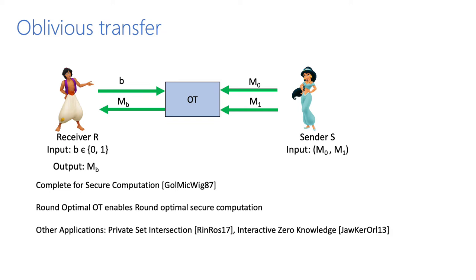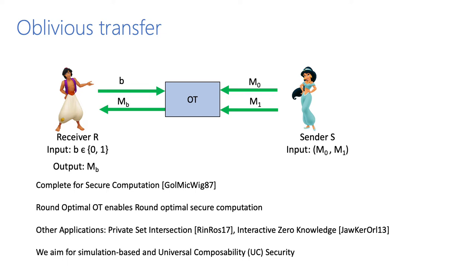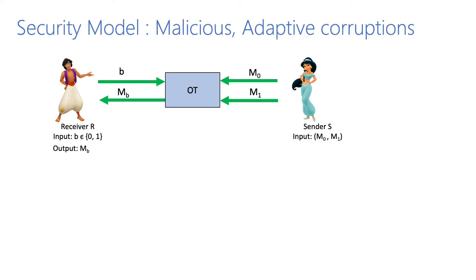OT also has other applications like private-set intersection and zero-knowledge. In this work, we want to achieve universal composability security based on Canetti's model, so we are going to focus on UC security.